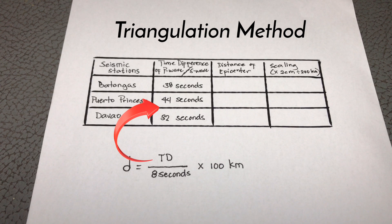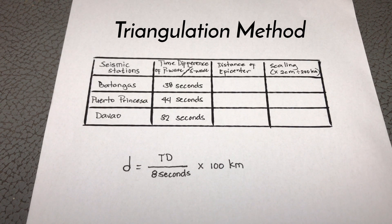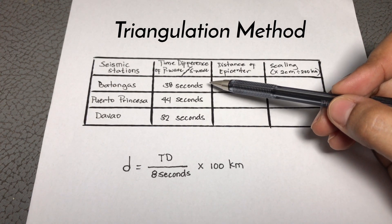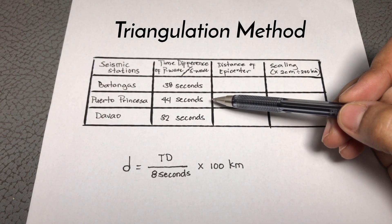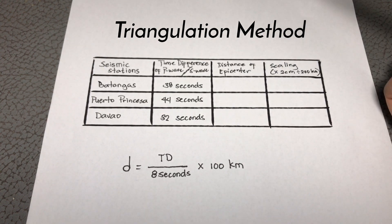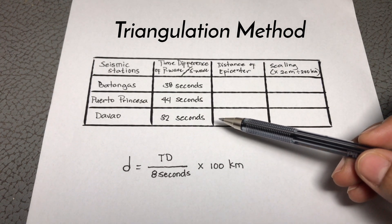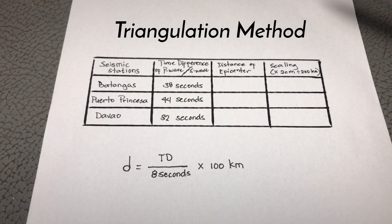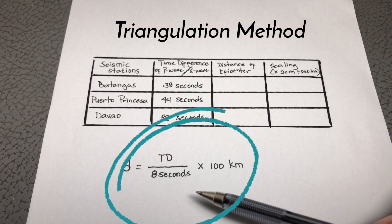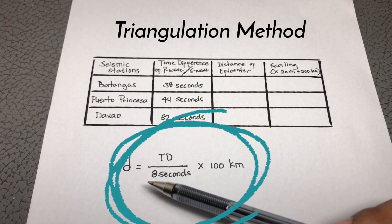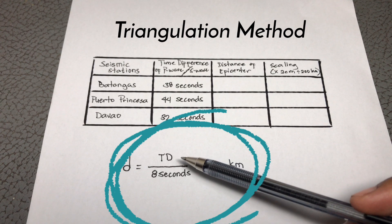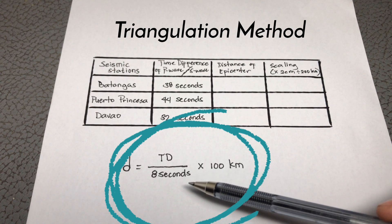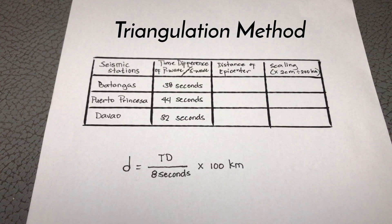The differences in the arrival times of P wave and S wave are already provided: 38 seconds in Batangas, 44 seconds in Puerto Princesa, and 32 seconds in Davao. All you need to do now is to solve for the distance of the epicenter using the distance formula: distance is equal to the time difference divided by 8 seconds, times 100 kilometers.